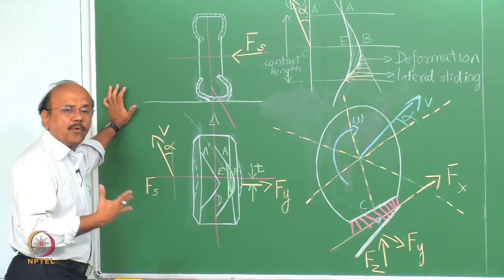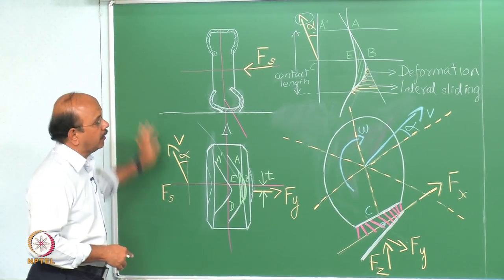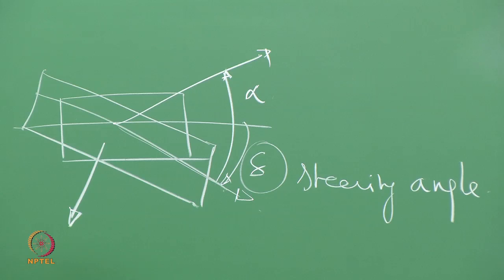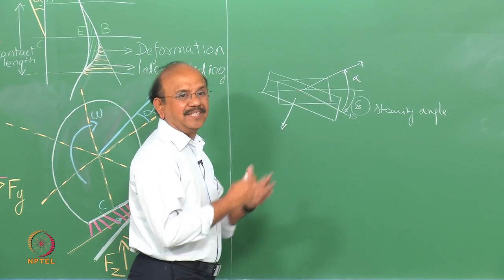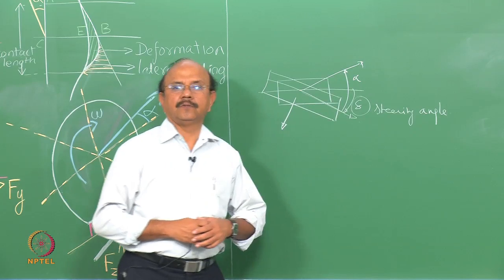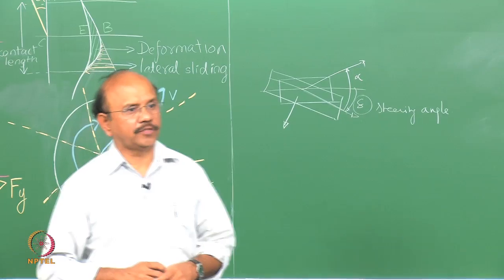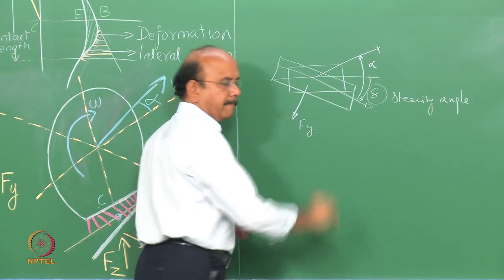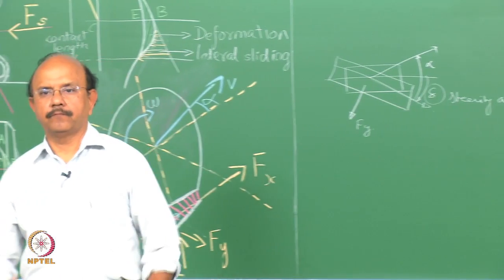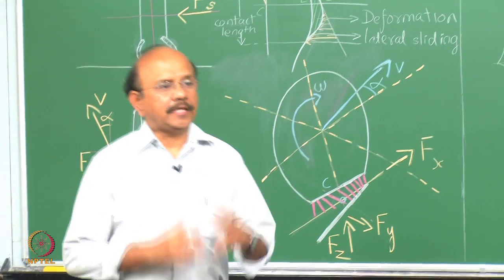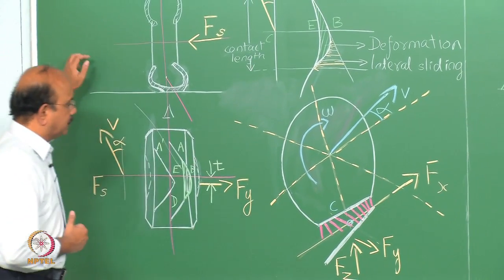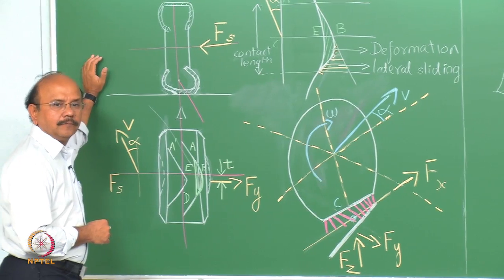What is required when you take to cornering? We need a centripetal force to accommodate the centripetal acceleration, whose D'Alembert equivalent is a centrifugal force. So I need one Fy. Now let us see how Fy is developed - it is quite complex, much more complex than what happens in the longitudinal case.